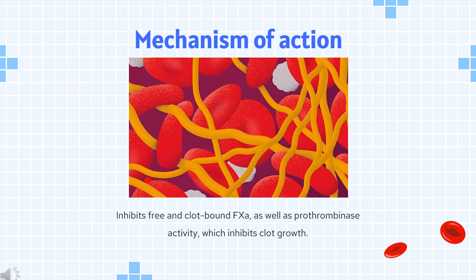Mechanism of Action: Dabigatran (Pradaxa) reversibly binds to the active site on the thrombin molecule, preventing thrombin-mediated activation of coagulation factors. It may have less of an antagonistic effect on thrombin-mediated platelet aggregation.